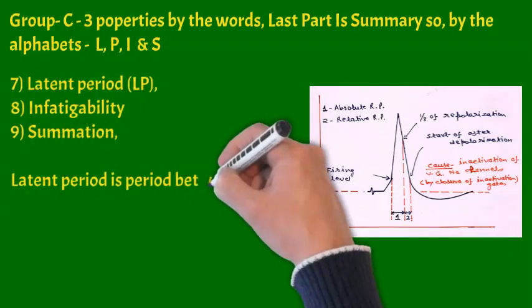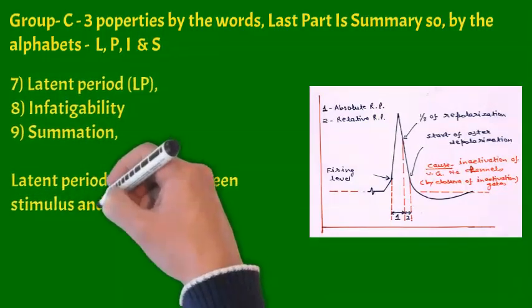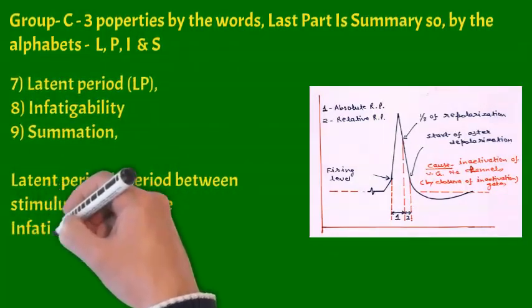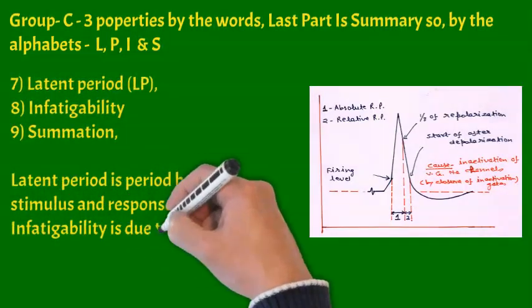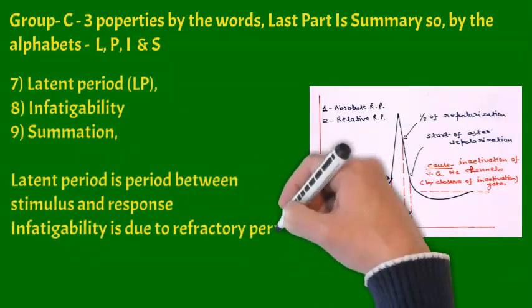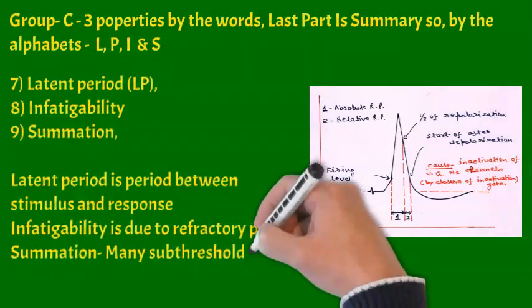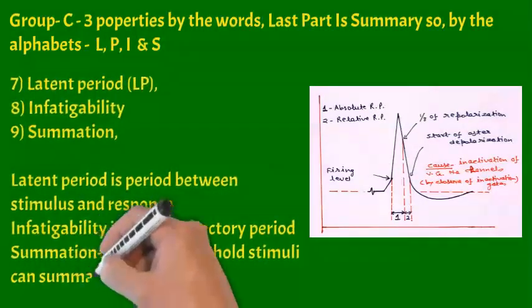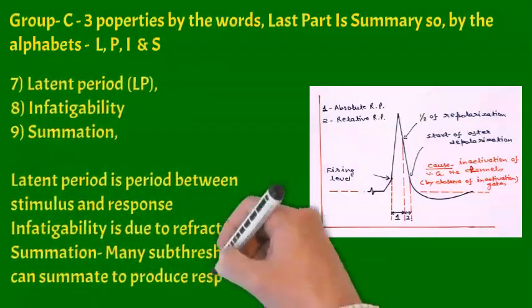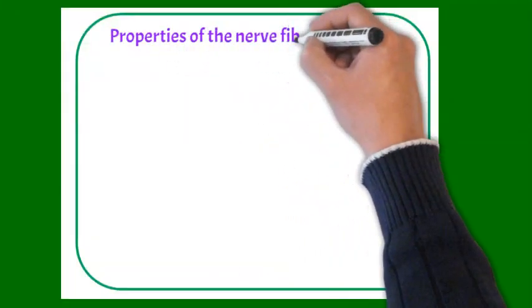Latent period we all know is period between stimulus and response. Now sir, infatigable because of refractory period, we can see in the diagram. And summation is many sub-threshold stimulus, if applied, they can be summated to produce response.